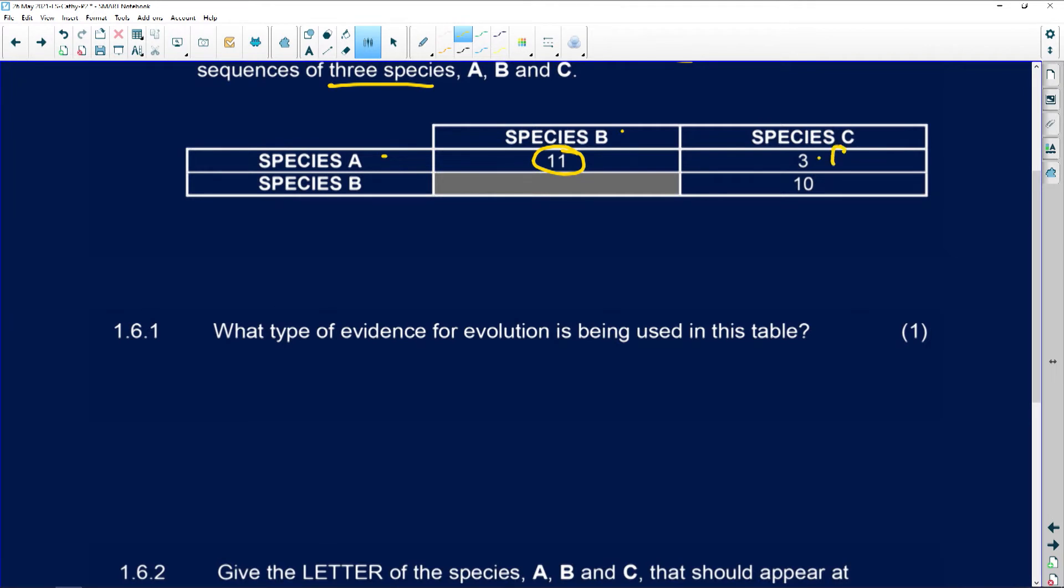So there are very few differences here, but there are lots here. Lots of differences. And then between species B and species C there's also lots of differences.